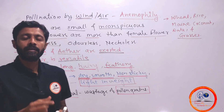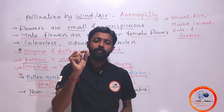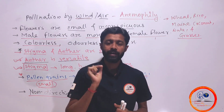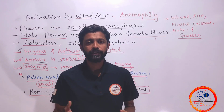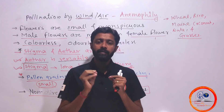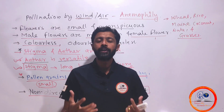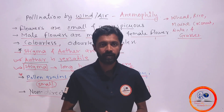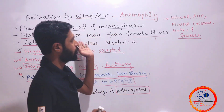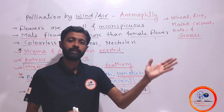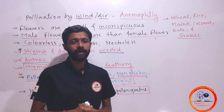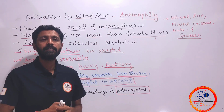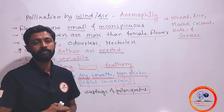Anemophilous flowers are small and inconspicuous — meaning the flower is small and not attractive. Since the pollinating agency is abiotic, there is no need to attract any agent, and pollen grains are simply blown from the anther to the stigma.